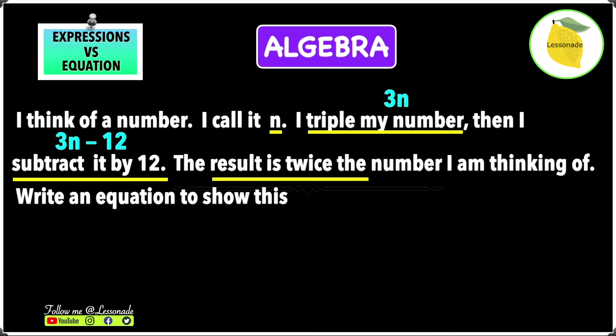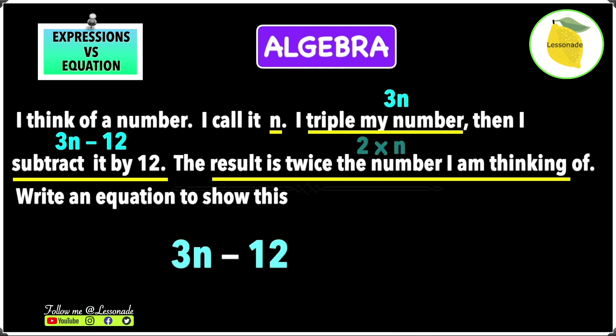Because it's an equation, we know there's an equal sign and two balanced parts. We found the first part: 3n minus 12. The result is twice the number they're thinking of — the number is n — so the result is 2 times n, which is 2n. Therefore the equation is 3n minus 12 equals 2n.